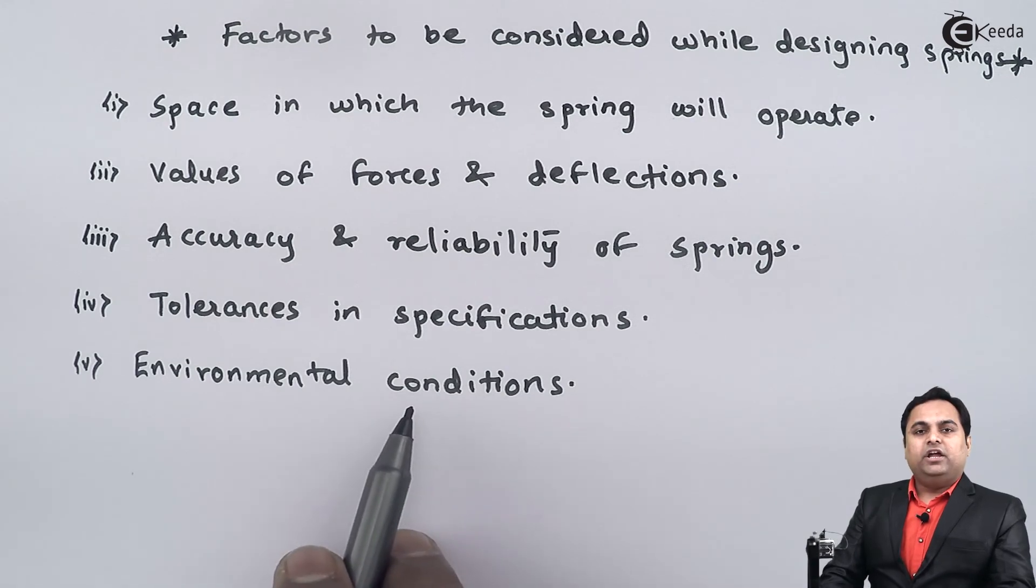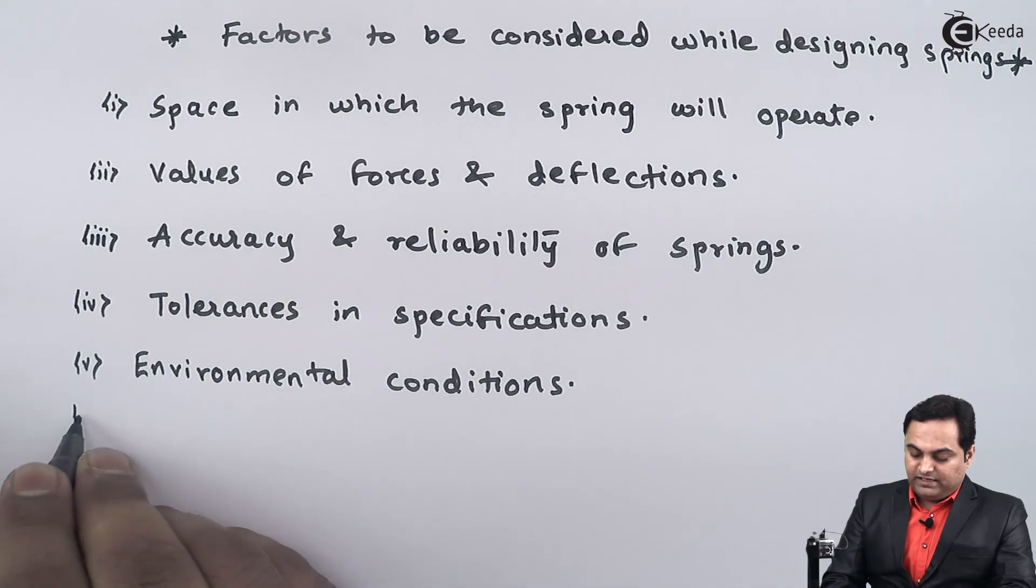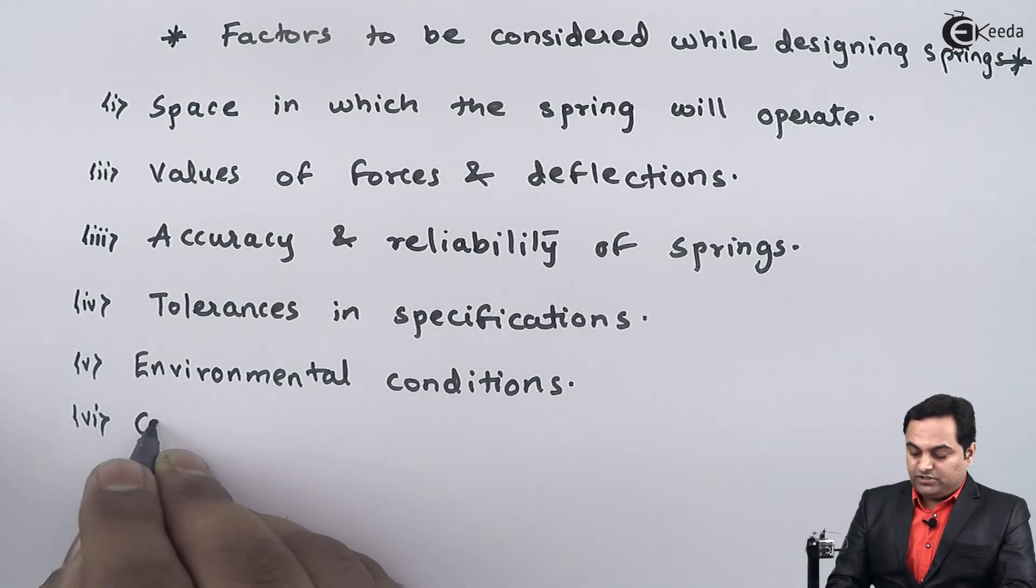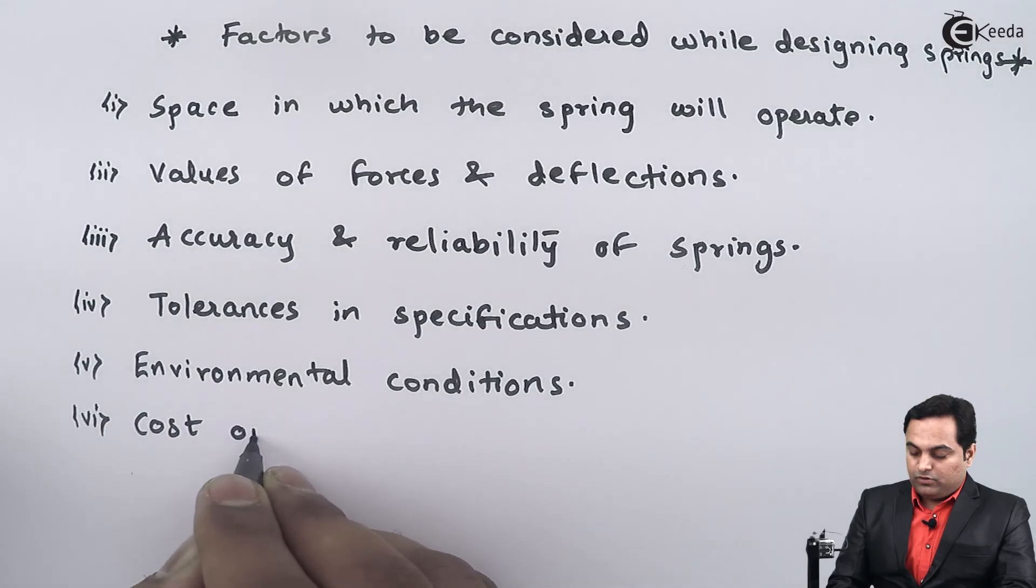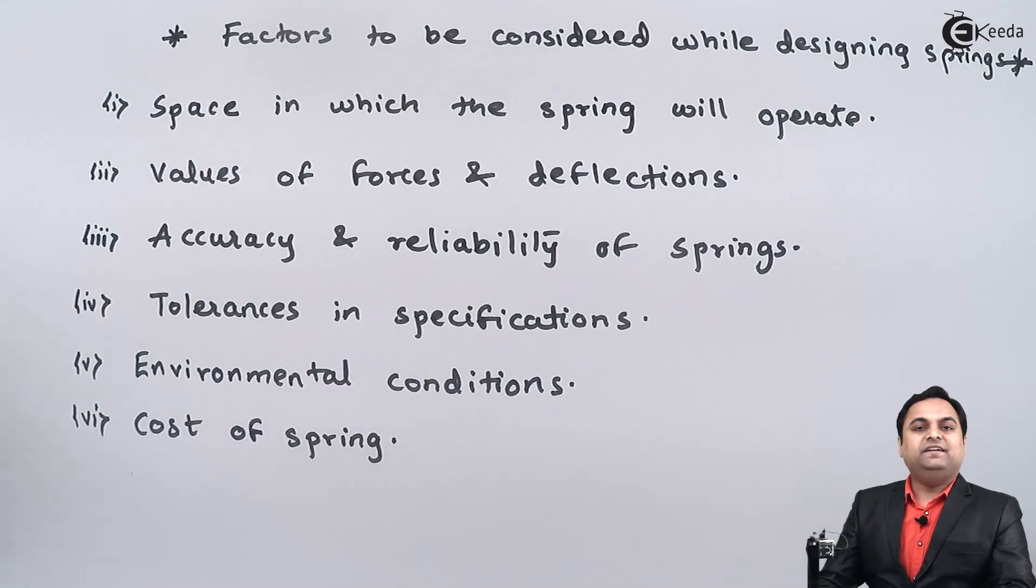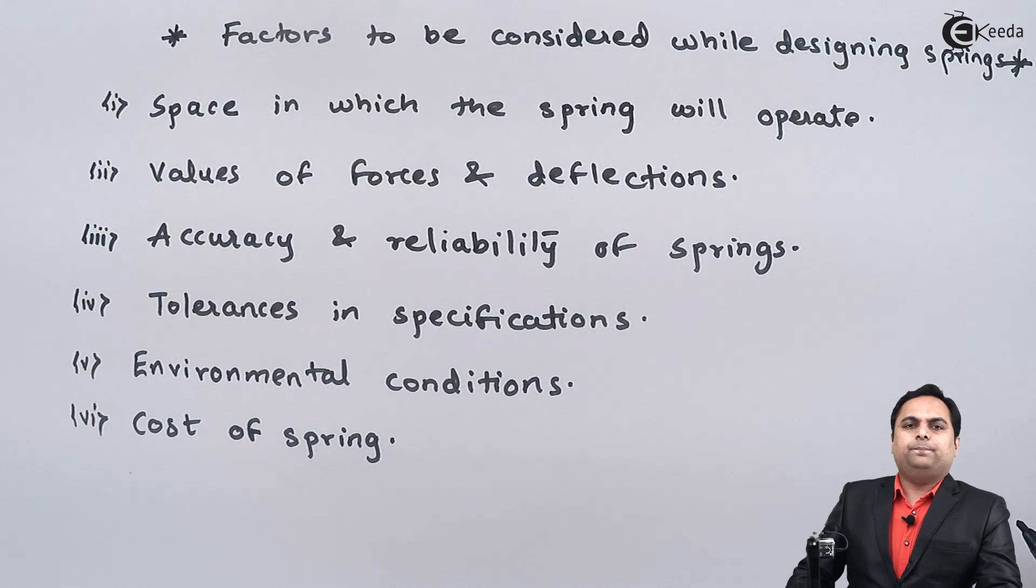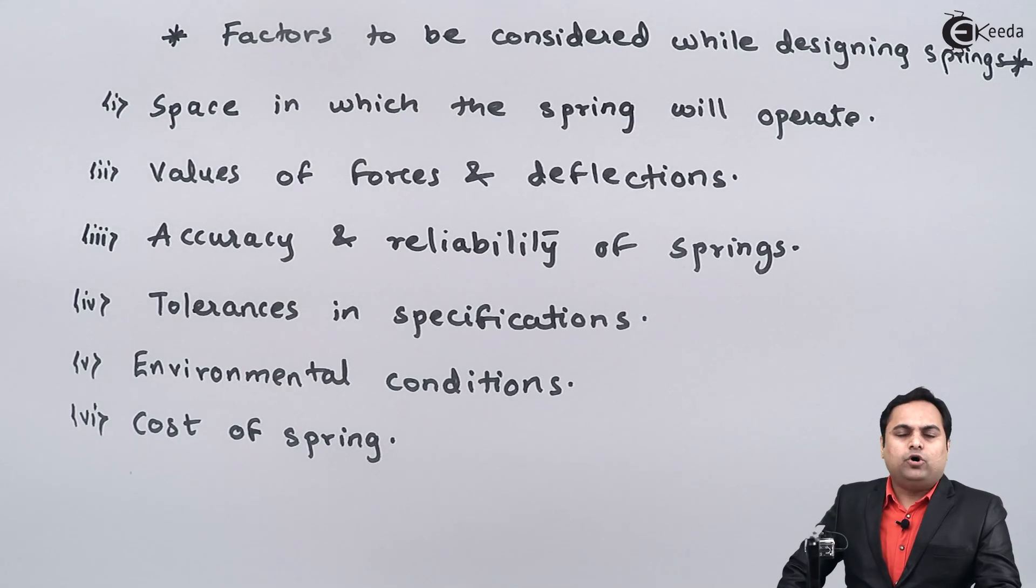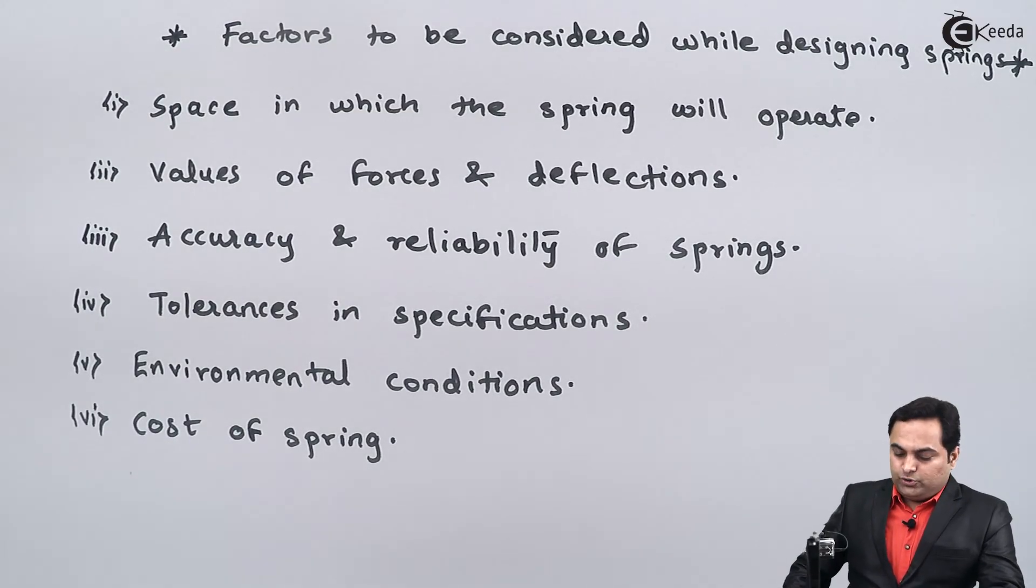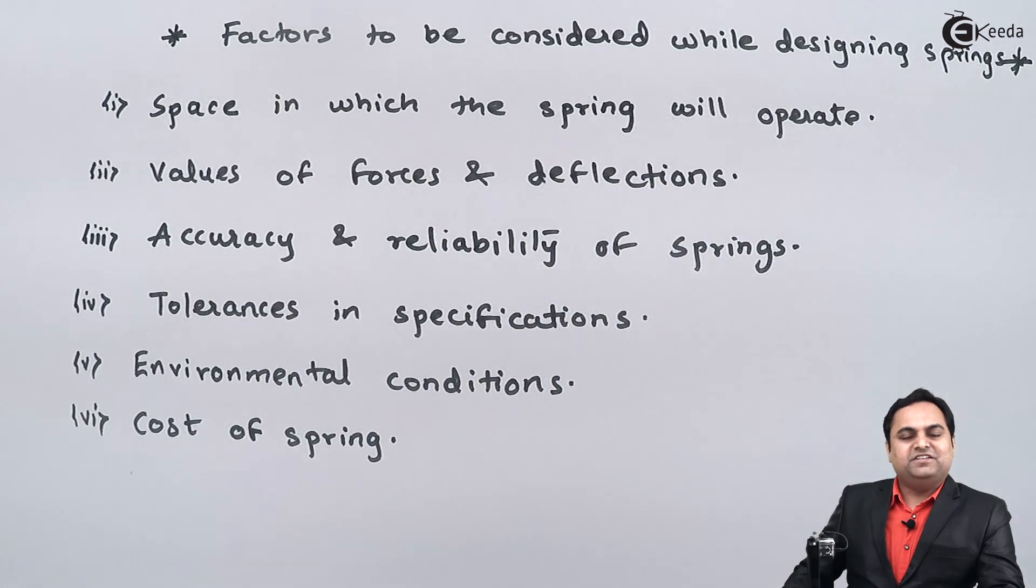We have to see while designing the spring where it is to be used, and then the last point which is there in the consideration is the cost of spring. That is we have to decide if the spring which we are designing is economical or not. The spring should fulfill its function with the least amount of cost. So here in this video we have seen the factors to be considered while designing a spring.